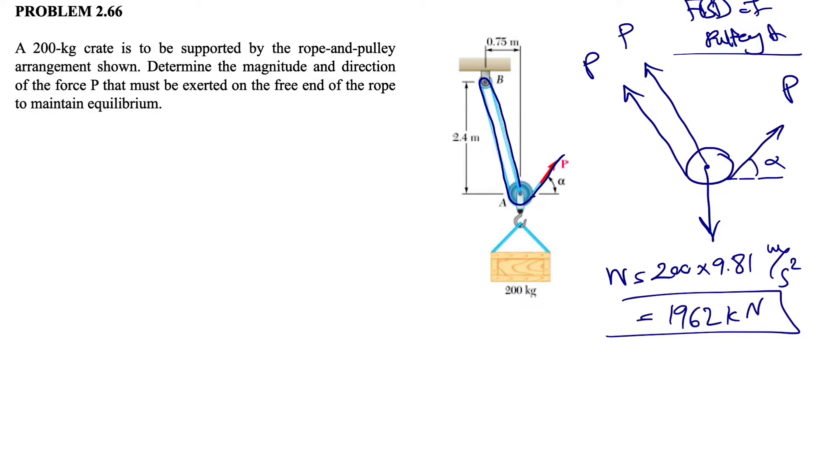That's pretty much all the forces that we have. We have some information about here, the alpha, which is one of the unknowns in the question. If we want to find this, we have dimensions for this part. We know this is 2.4 and the other side is 0.75.